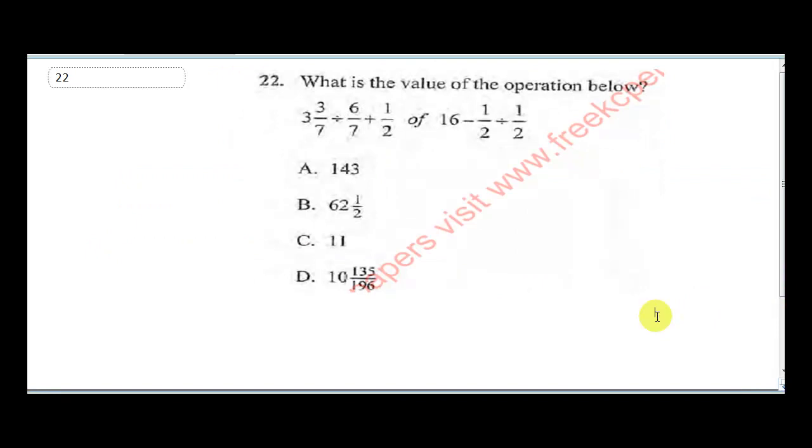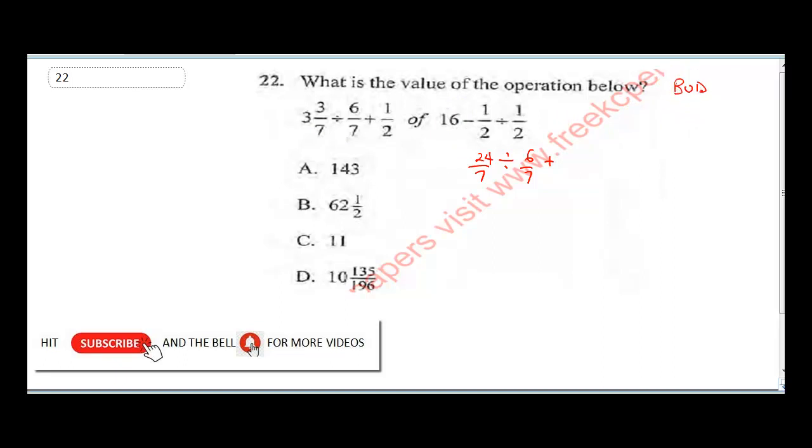Now question 22 says what is the value of the operation below? Now all you need to do is apply your BODMAS. It says 3 or number 3 over 7. Now let's change 3 or number 3 over 7 to an improper fraction. That will give us 7 times 3, that's 21 plus 3, that will give us 24 over 7 divided by 6 over 7 plus. Now it says 1 over 2 of, remember our BODMAS, which one comes first? There's no bracket, so we treat the of first. So this would be 1 over 2, and remember your of will become times. This would be 16, so minus. So I will choose to put this in the bracket because it was the of minus 1 over 2 divided by 1 over 2.